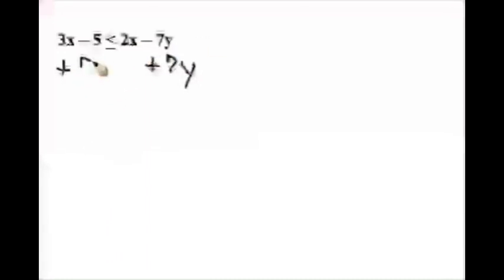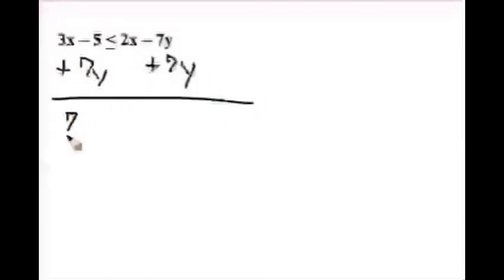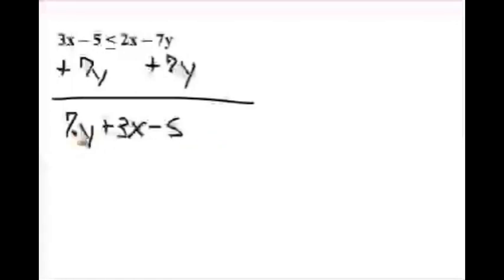Let's do one more together. Notice it says 3x minus 5y is less than 2x minus 7y. If you feel confident, pause the video and try it. When we start, we notice that y is on the right-hand side. I like my y on the left-hand side, so I'm going to add 7y to both sides to get rid of that subtract 7y. Adding 7y to the left side gives us 7y plus 3x minus 5. Notice I couldn't combine 7y with 3x or 5 because they weren't like terms.